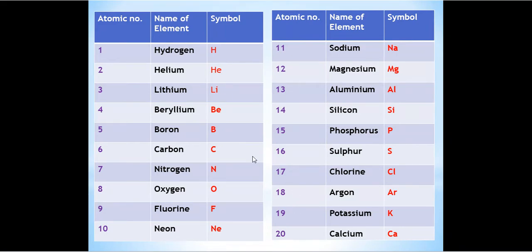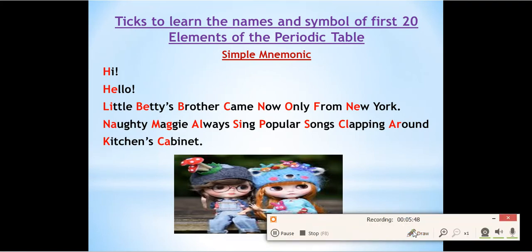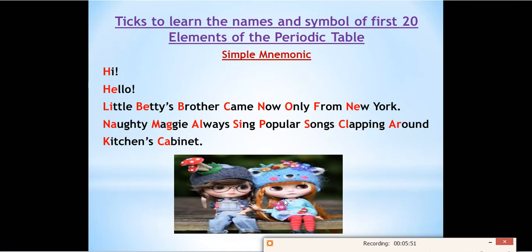Now this is the trick — how we will learn the symbols of the first 20 elements through a simple mnemonic. I will tell you a story of two cute girls. One is little Betty, and the other girl sitting behind her is naughty Maggie. This story will help us create the mnemonic. You have to remember: little Betty and naughty Maggie.